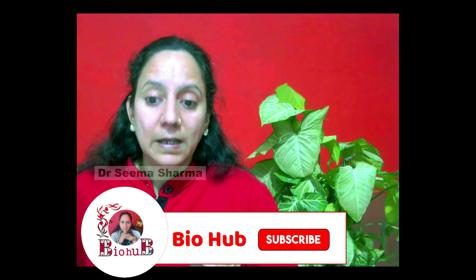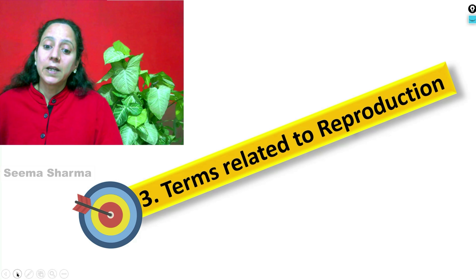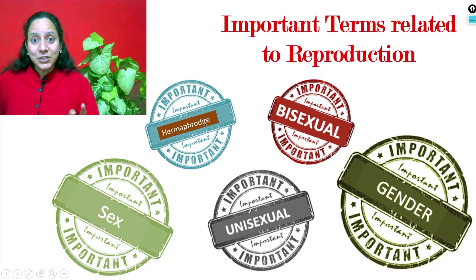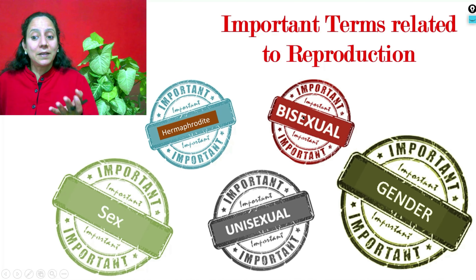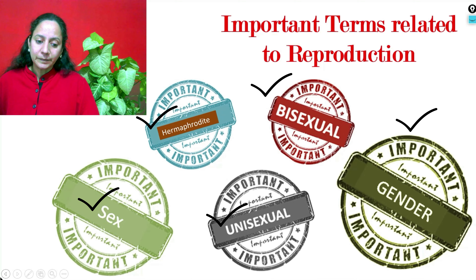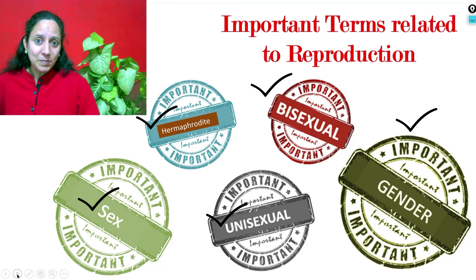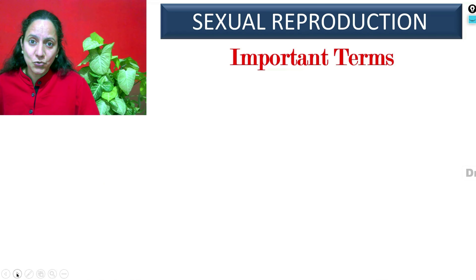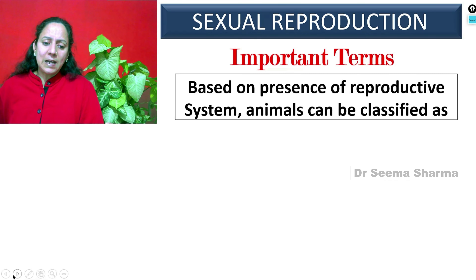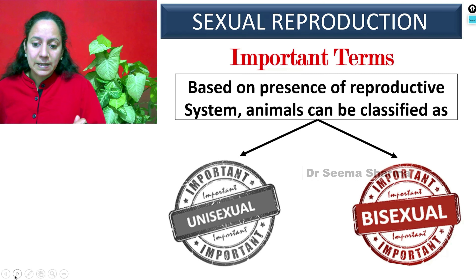Before proceeding, let us know about some very important terms related to sexual reproduction — terms covered in our learning objective three. Their knowledge is essential if you want to understand this chapter. These terms are: unisexual, bisexual, hermaphrodite, sex, and gender. They are not often taught on other channels, but I am teaching them because I want you to understand the chapter completely. Based on the presence of the reproductive system, animals can be classified into two categories: unisexual or bisexual.